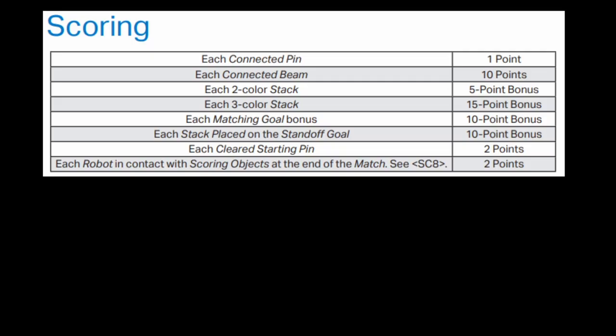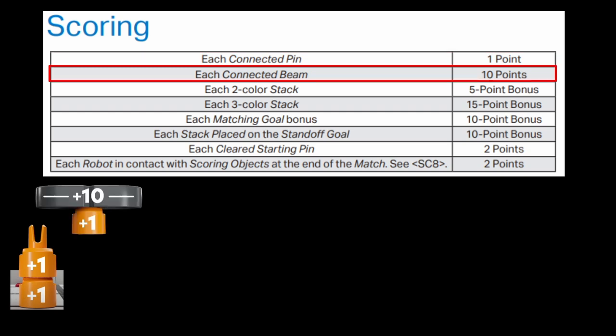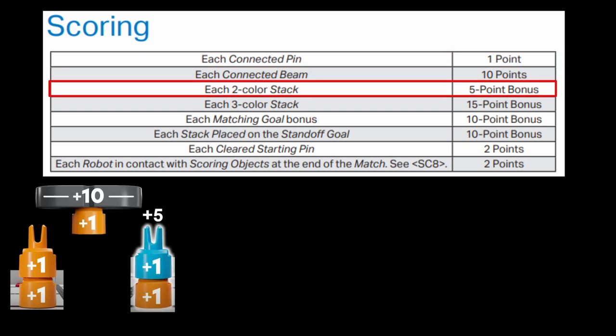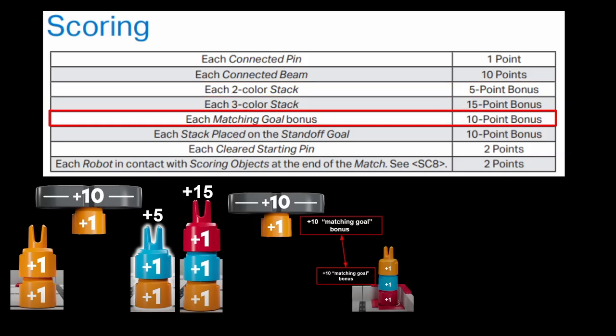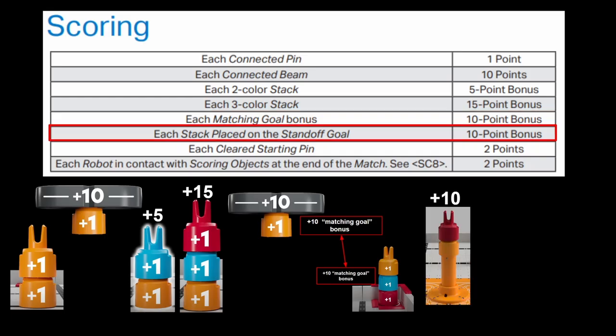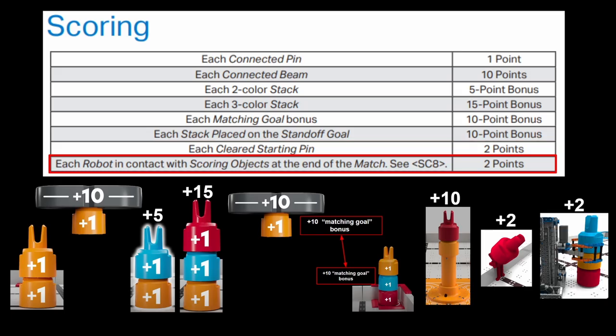So in closing, here's a snapshot summary from the game manual, linked below, showing all the scoring. Yep, we talked about each pin in a stack being worth one point. Beams in a stack are worth ten points. Stacks with two colors in them get a five point bonus. Stacks with three colors in them get a 15 point bonus. The fun matching goal bonus that applies to stacks in a goal where the bottom pin matches the color of the goal, or any stack that has a beam in it. All stacks that are on a standoff goal get an extra ten points. Clearing those starting pins gives you two points. And finally, as we just discussed, each robot in contact with two or more scoring objects at the end of the game will get two points. You know all the scoring now. I hope this was helpful. Keep an eye out for more videos and have a great season.